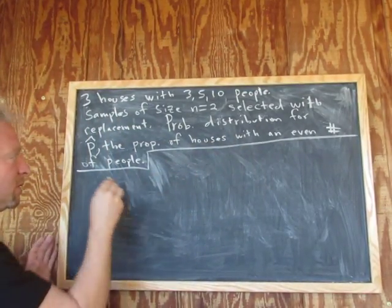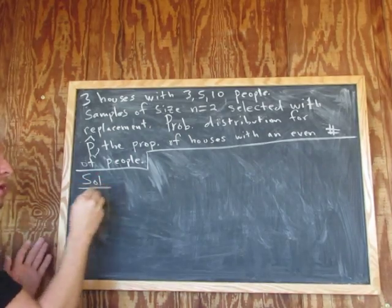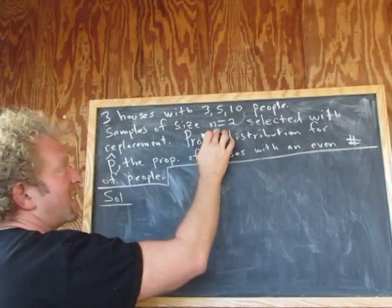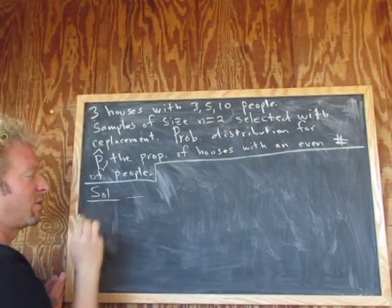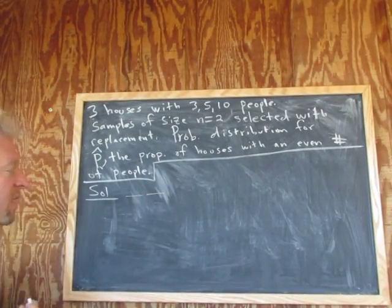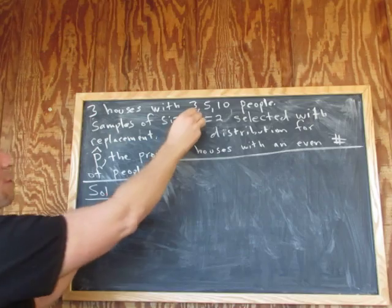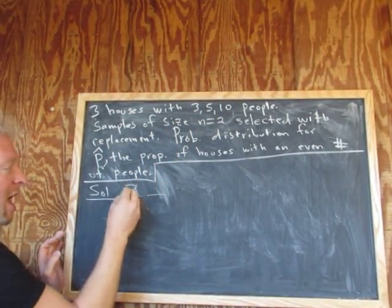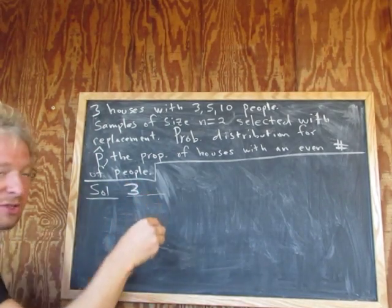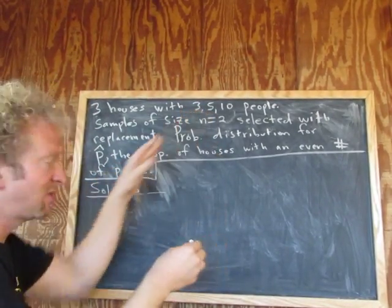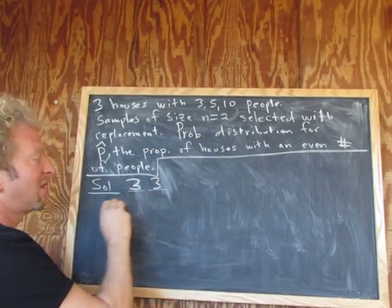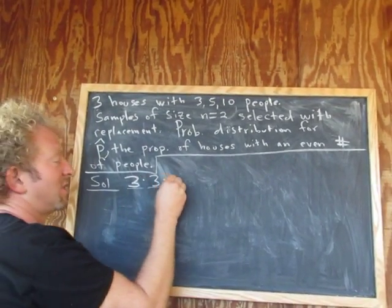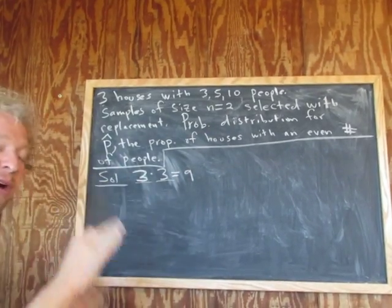The first thing you want to do is realize how many possible samples there are. We're taking samples of size n equals 2, so there's a first pick and a second pick. There are three ways to pick the first house. And it's with replacement, so there are still three ways to pick the second house. By the multiplication rule, the number of ways to pick both houses is 3 times 3, which equals 9. So there are nine possible samples.